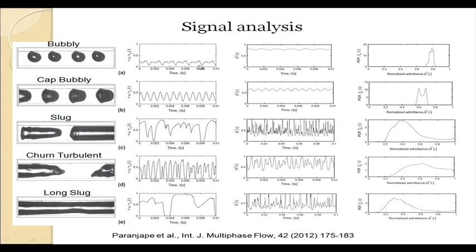Just like the optical probe case, for bubbly flow we have obtained a peak at a larger value of voltage. When water is flowing, the circuit yields a higher voltage, so for bubbly flow we have obtained a unimodal peak at a higher voltage and there is a small spread in it.